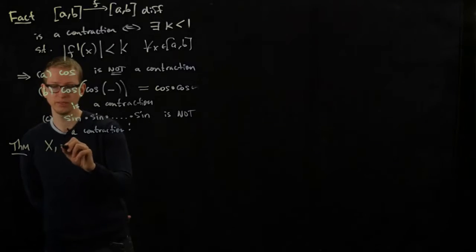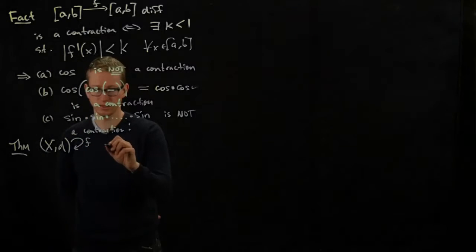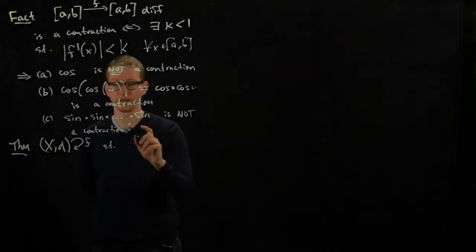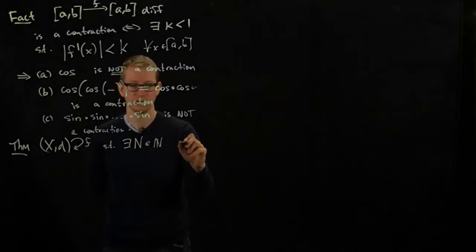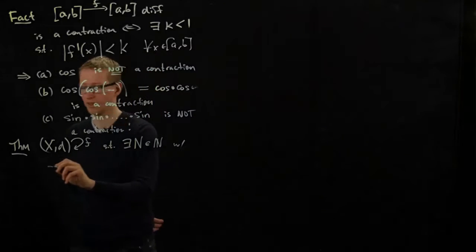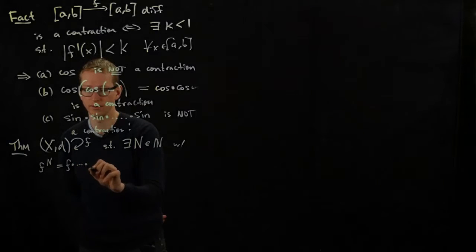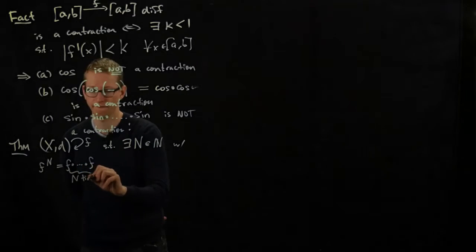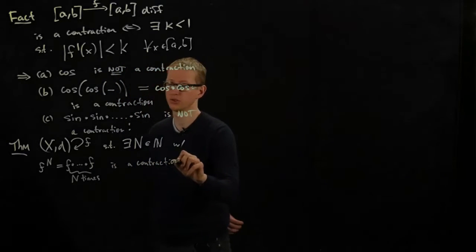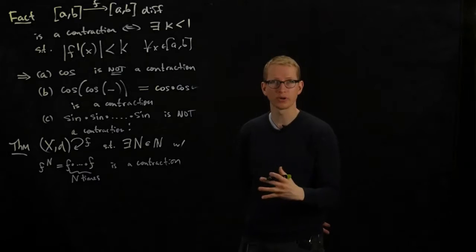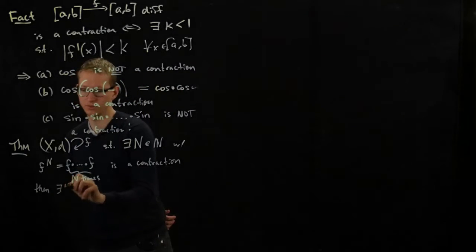If I have a complete metric space, and a function from it to itself, such that there exists some natural number n with f to the nth power—so this means the nth iterate of f, this is n times—is a contraction. So even if f is not a contraction, but if some power of it is a contraction, then there exists a unique fixed point.